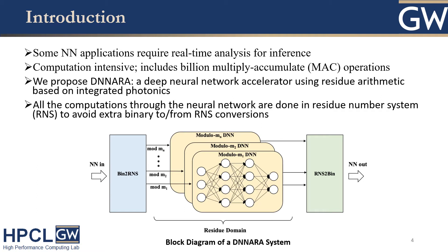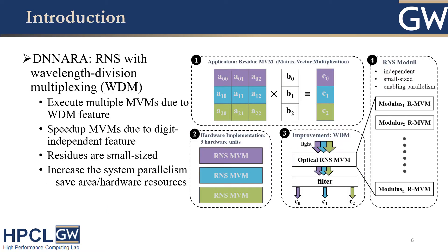Here is the high-level representation of the DNARA system. To avoid extra conversion between binary and RNS, we do the conversion only at the very beginning of the neural network. After all the computations are done, we convert it back to the binary system. All the computations are done in the residue domain. In the proposed DNARA system, we implement the accelerator in the Residue Number System with integrated photonics, taking advantage of Wavelength Division Multiplexing, also called WDM.